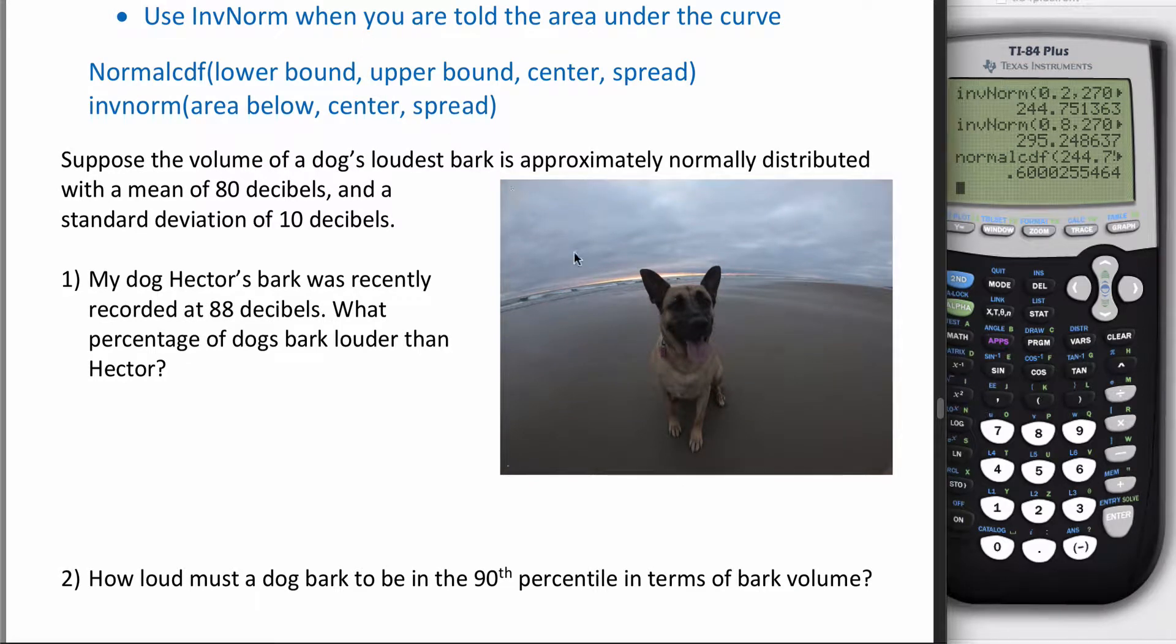Let's get to an example. Suppose the volume of a dog's loudest bark (here's my dog Hector, he's awesome) is approximately normally distributed with a mean of 80 decibels and a standard deviation of 10 decibels. That means I can draw this symmetric bell shape. In the middle goes the population mean mu equals 80, and the population standard deviation sigma equals 10. I could count up by tens: 90, 100, 110, and count down by tens.